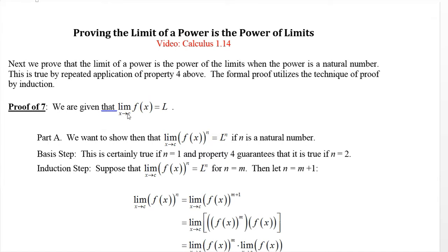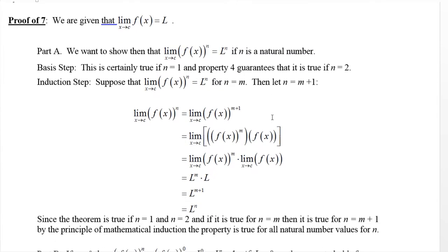So we're given that the limit as x approaches c of f(x) equals L. Now we're actually going to use the technique of proof by induction here. So I'm going to try to explain that a little bit. And we're going to actually just be using the product rule, property number four that we had proved earlier. So we won't see any deltas and epsilons in this proof, but you will see a technique that I need to explain. And that technique is the proof by induction.